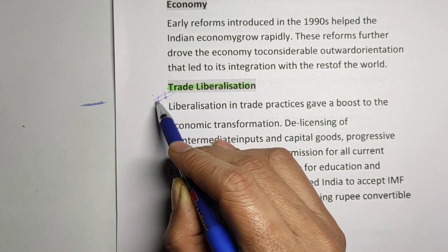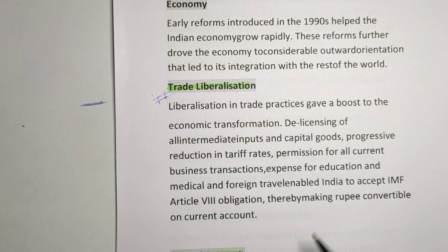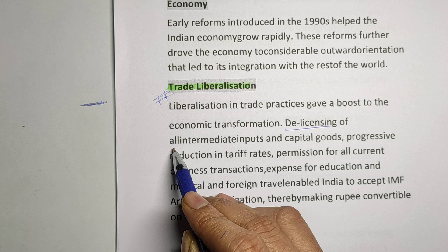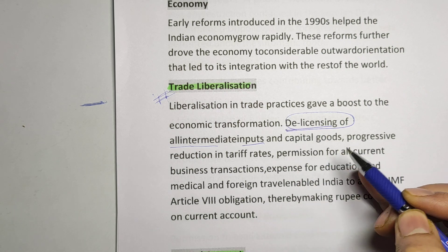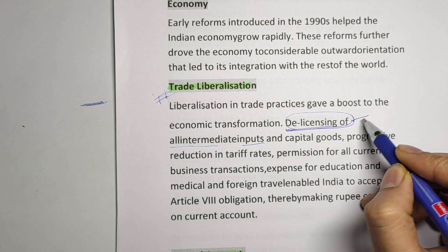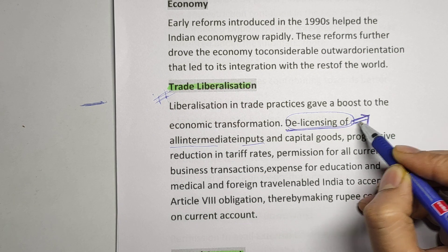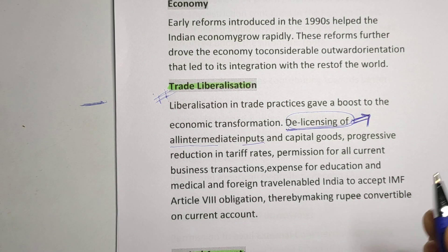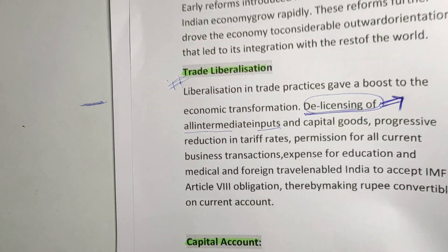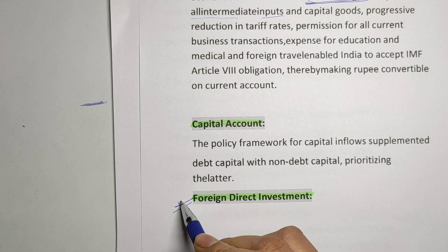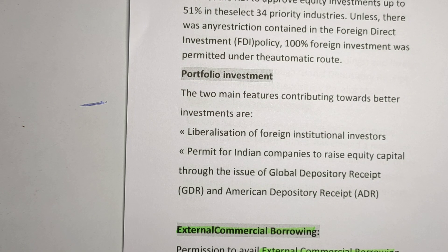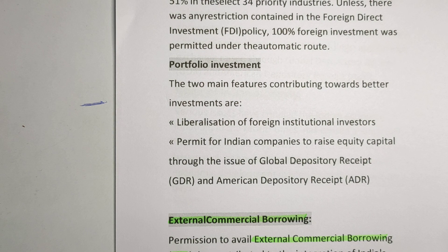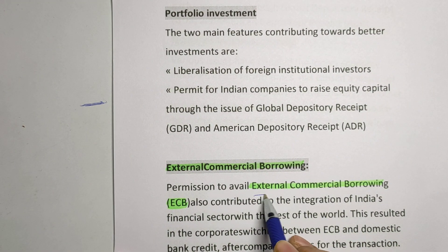In trade liberalization, many reforms were adopted — for example, easing the licensing of intermediaries and inputs. Nowadays this is referred to as ease of doing business. Foreign direct investment was allowed, and in certain sectors in India now 100 percent FDI is allowed. You also have to remember the full form of ECB — that is External Commercial Borrowing.